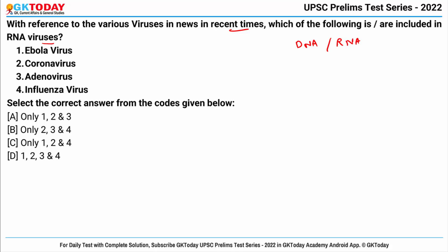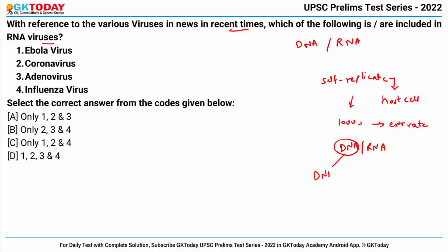A virus can self-replicate inside a host cell and the infected cells may produce thousands of new copies of the original virus at an extraordinary rate. The genetic material of a virus can be either DNA or RNA. Viruses that contain DNA as genetic material are called DNA viruses, while RNA viruses contain RNA as their genetic material.